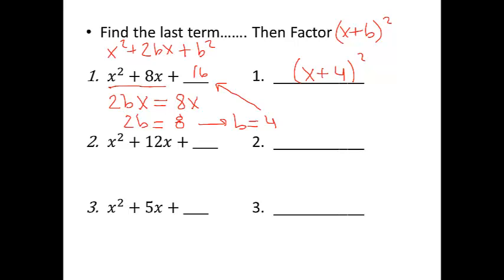So in example 2, instead of showing all that work, I'm simply going to say my b value is going to be equal to half whatever my middle term is. So half of 12 is 6. And if you can do that mentally, of course, you don't have to write out half of 12. You can just say b is 6, and if b is 6, I know what goes in this last term. My last term is b squared, or 36. If I go to factor that then, remember it's not x plus my last term, but it's x plus my b value. My b value is 6, so it's x plus 6 squared.